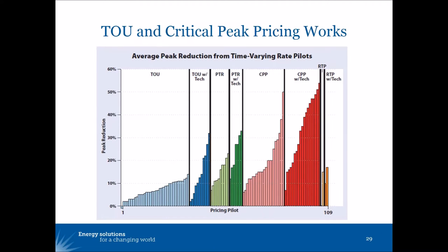This slide, taken from a RAP publication from a few years ago, shows the average peak reduction measured and quantified in more than 100 different pilot studies of time-varying rates. You see one bar for each of 109 different pilot studies, and the height of each bar shows the peak reduction that was measured. These time-varying rate pilots are grouped into different colors based on whether the rate was a time of use rate, a peak time rebate, a critical peak pricing plan, or real-time pricing plan.